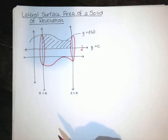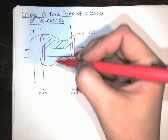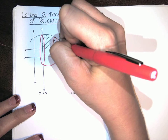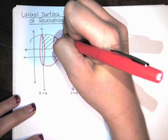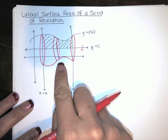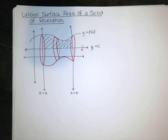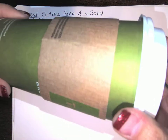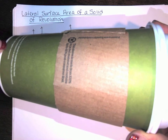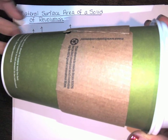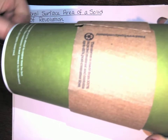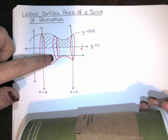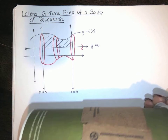Now I'm going to slice this the same way we sliced for the disk method — perpendicular to our axis — but instead of thinking about the volume of the disk, we're going to think about wrapping a piece of paper around our solid of revolution. Think of it like a coffee cup sleeve: I've got a strip of paper going around this vase shape, and there will be n of those strips down the length of the cup.